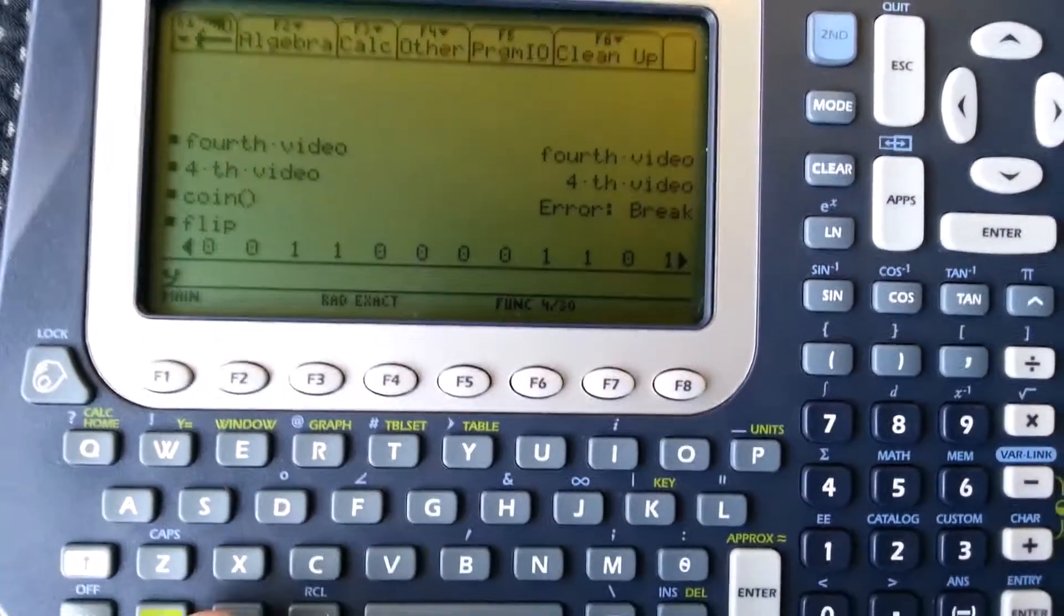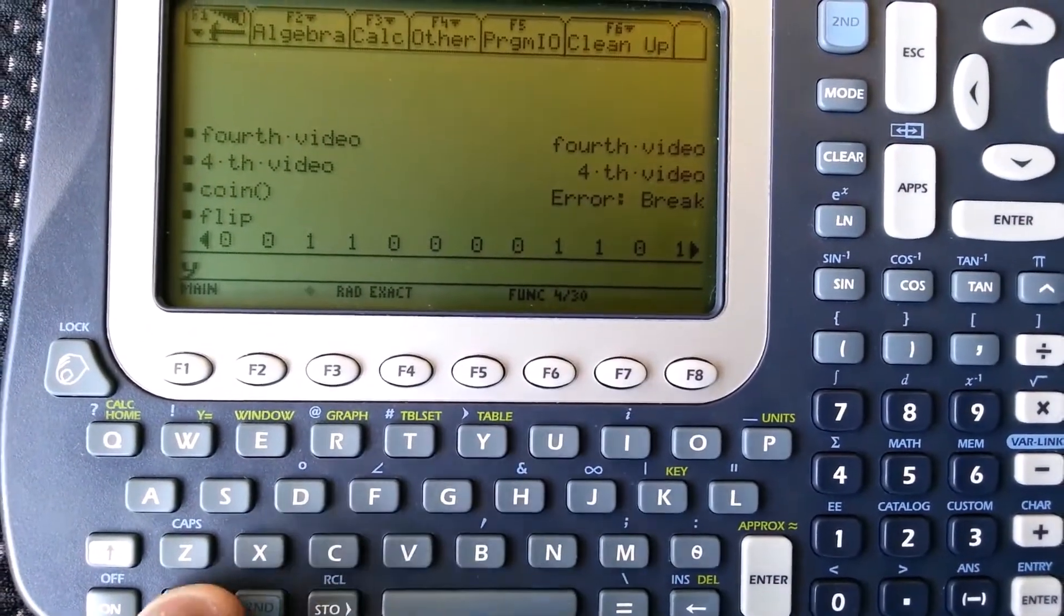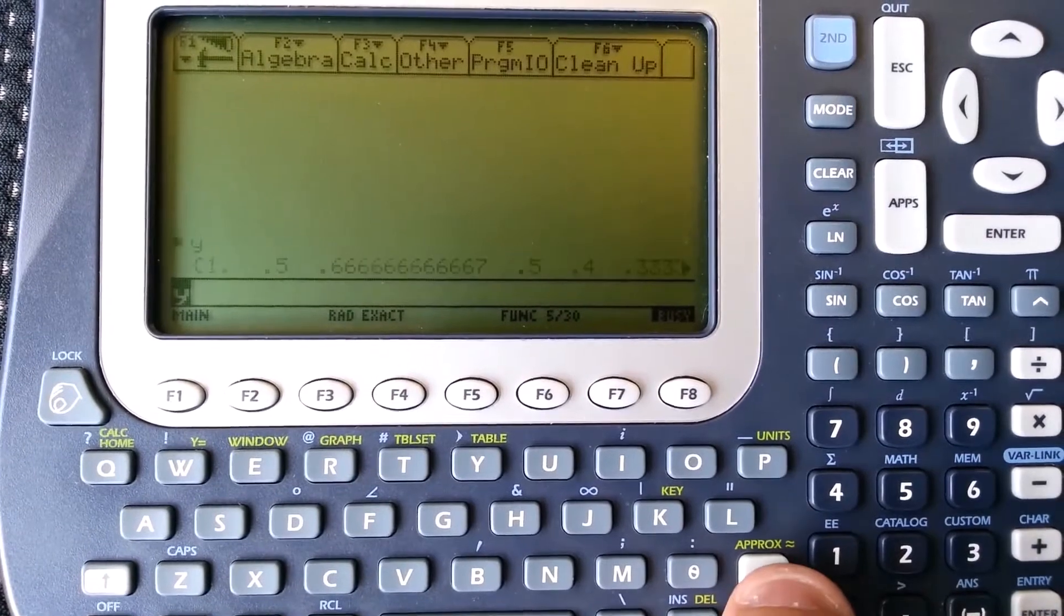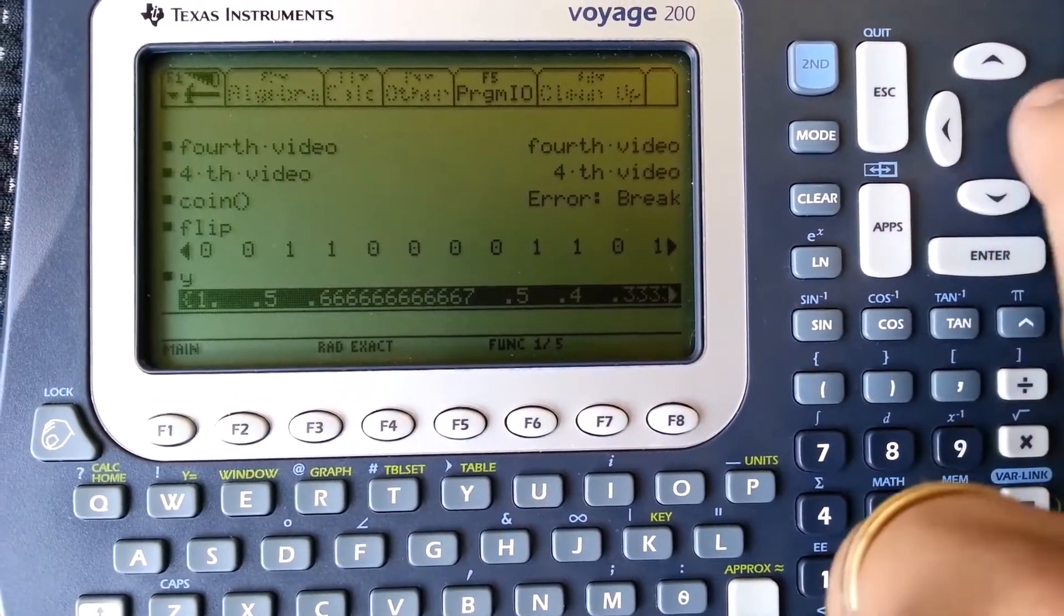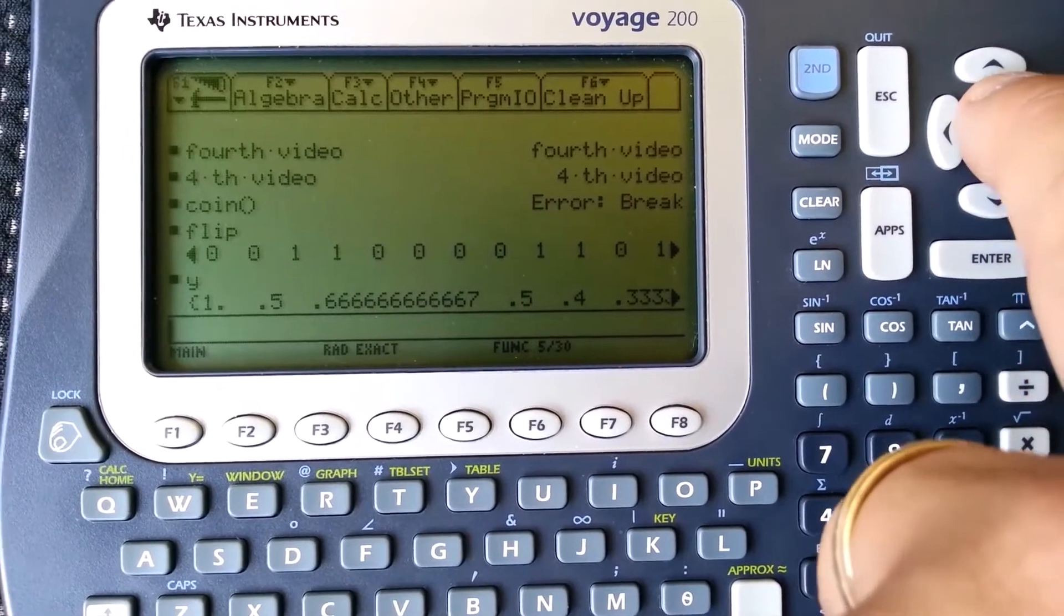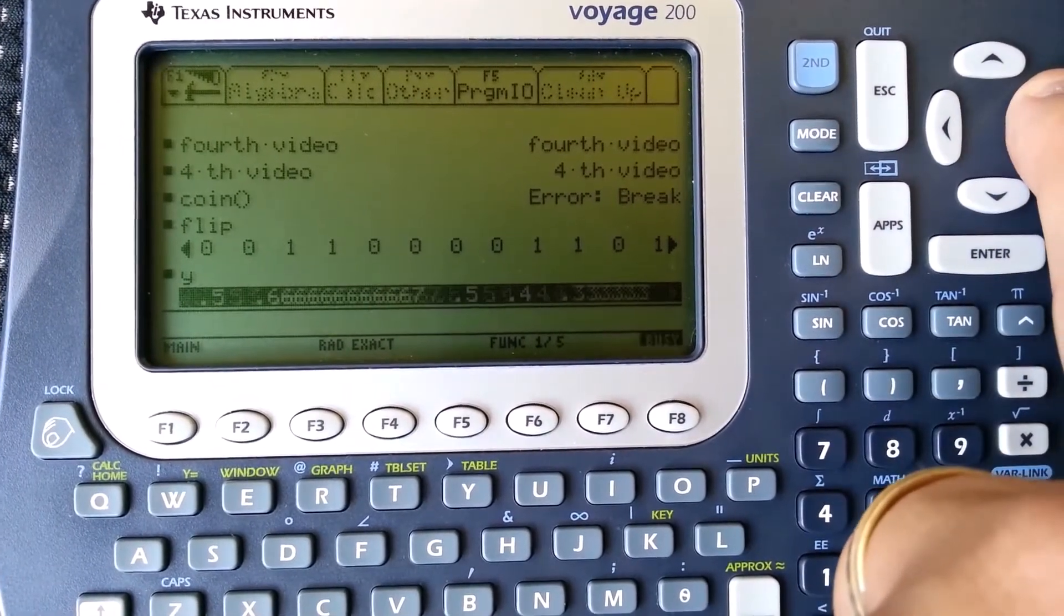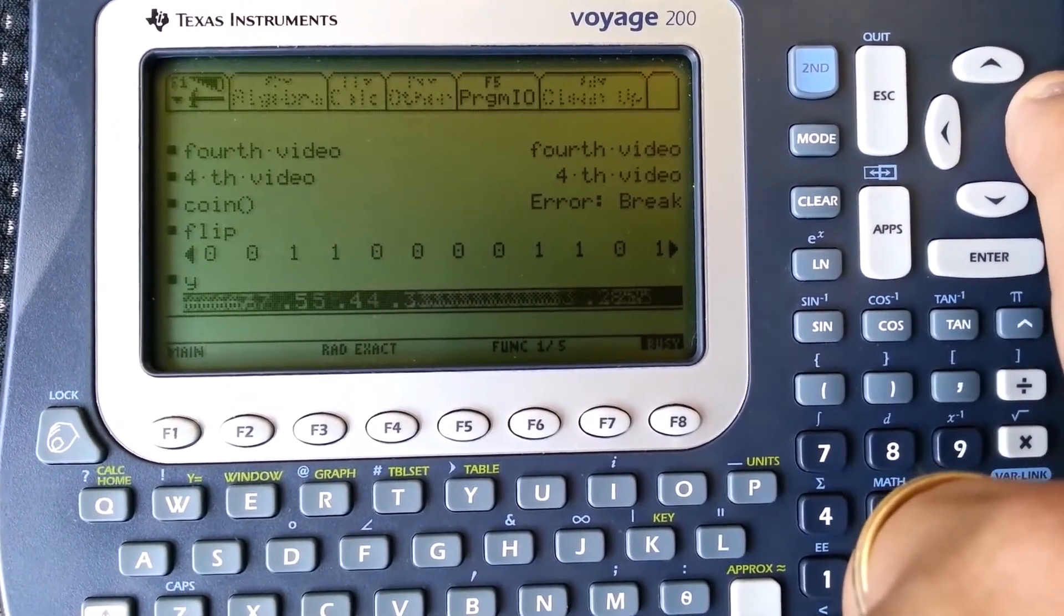Let's look at the Y vector. So this keeps track of the long-term probability of, basically, probability of heads. So you can see a change over time.